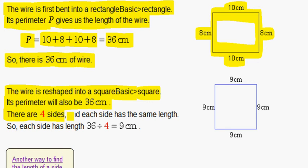There are four sides and each side has the same length. So each side has length 36 divided by 4, which is 9 centimeters. So each side of the square is 9 centimeters.